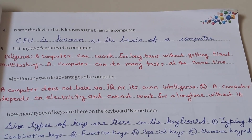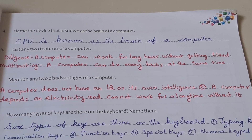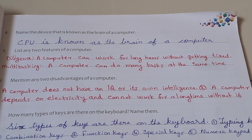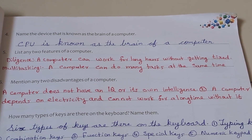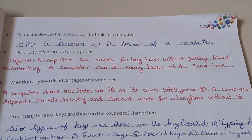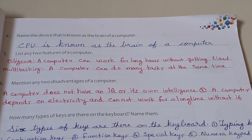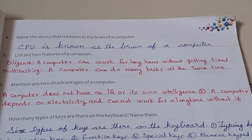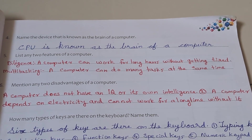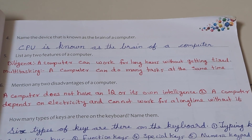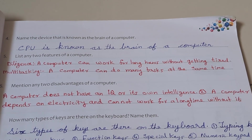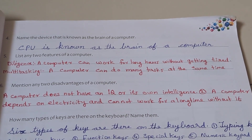Question 5: List any two features of a computer. Answer: First, diligence — a computer can work for long hours without getting tired. Second, multitasking — a computer can do many tasks at the same time.